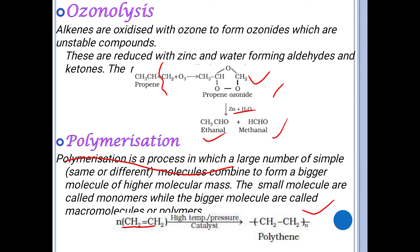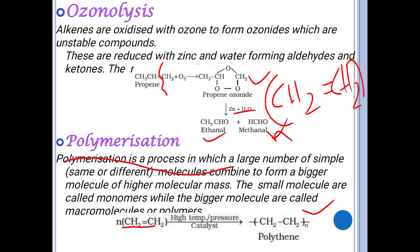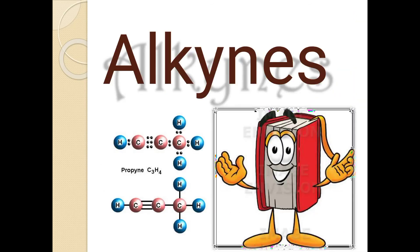For example, ethene (CH₂=CH₂) can be polymerized — adding n number of monomer units at high temperature or in the presence of a catalyst gives polyethylene. This concludes the topic of alkenes; alkynes will be covered in the next class.